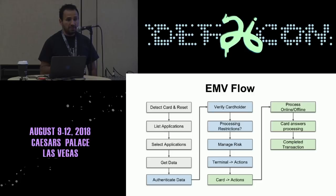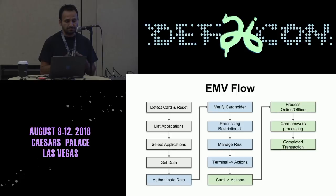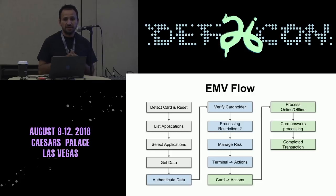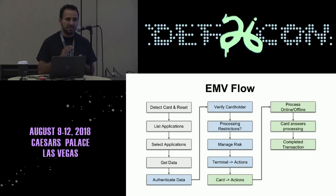A little bit about how this transaction works. The POS detects the card or the smart card, lists the applications, selects the applications, gets data, implements the fraud vectors, also the managed risk, some actions from the card and from the POS simultaneously, and after that, completes the transaction. The complete transaction doesn't mean it could be a successful transaction. It could be a declined transaction, but the transaction has to be finished one way or another.